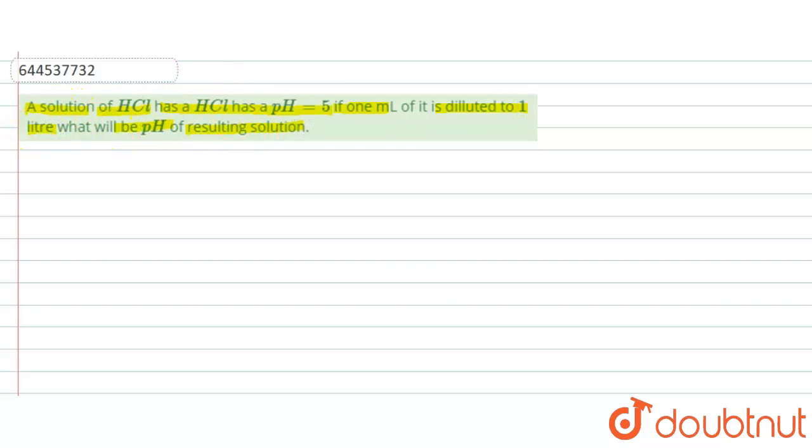So now friends, in this question we have been given the pH equal to 5 of HCl and volume 1 is given as 1 ml, and we have to find the pH 2. Let us take pH 1 and pH 2 of the resulting solution, and volume 2 is given as 1000 ml.